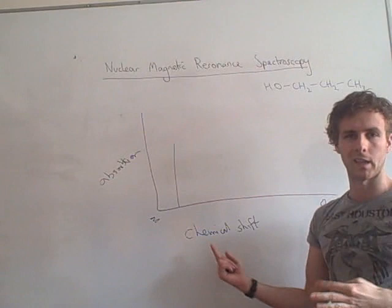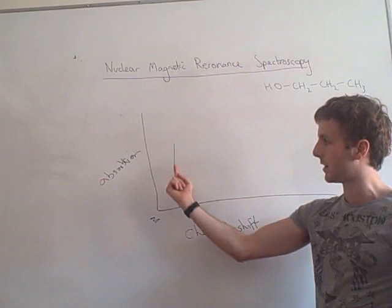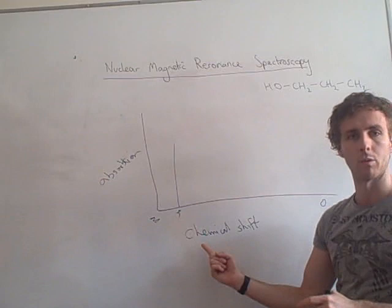Remember, think of this as frequency even though really it's not. So this carbon absorbs a very specific type of radiation to flip its spin at whatever this number is on your frequency or chemical shift.